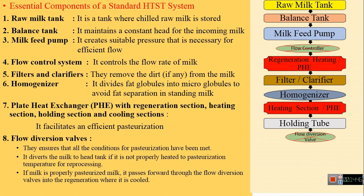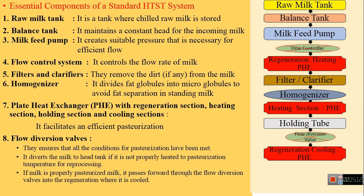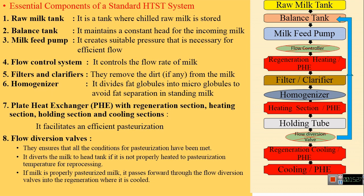Subsequently, milk passes to the flow diversion valve — an important valve that ensures whether milk has been properly pasteurized, i.e., exposed to the required temperature and time. If properly pasteurized, it is passed towards the regeneration section for partial cooling. If not properly pasteurized, it is diverted back to the balanced tank to pass through the system again. From the regeneration section, where partial cooling takes place, milk enters the cooling section where its temperature is further reduced to 4°C, and then passed to the packaging unit under chilled conditions.